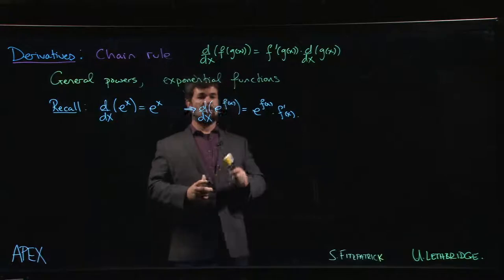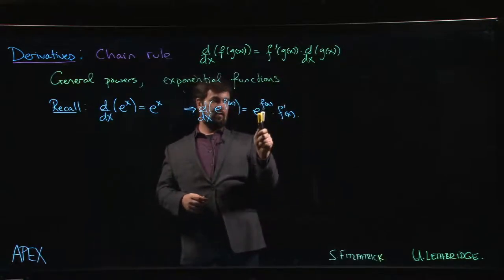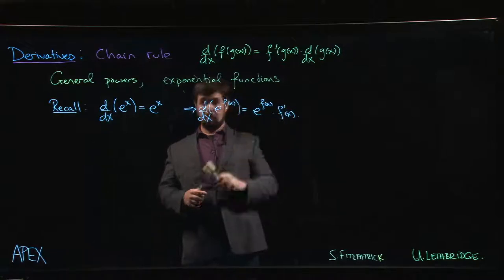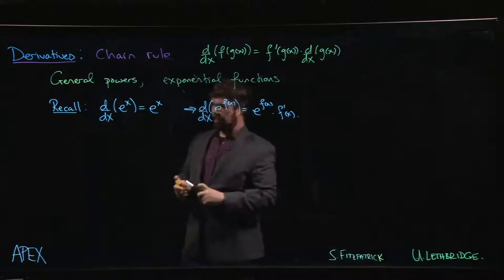If you want to take the derivative of an exponential function where the exponent is not just x but some function of x, chain rule says f prime is still that same exponential function. So this remains the same but then you multiply by the derivative of the exponent. So we have this general pattern for taking derivatives of exponentials.